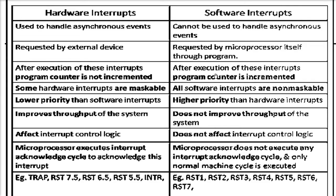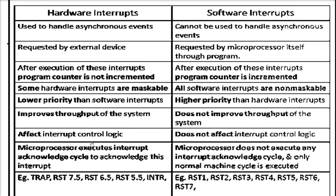Some hardware interrupts are maskable, but they have lower priority compared to software interrupts. The hardware interrupt improves throughput because the devices are giving the interrupts. Software interrupts don't improve throughput because the microprocessor will be busy handling them again and again. Hardware interrupts affect the interrupt control logic, while software interrupts do not affect the interrupt control logic.